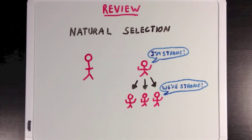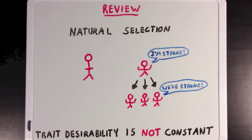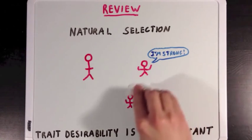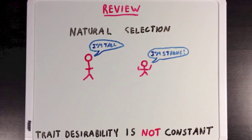But you should know that as times change, so too does the specialness of a trait. The desirability of a trait is not constant. Let's say that a new predator comes into play in our population here, and that can overpower even our strong people. Maybe now someone who's tall is more likely to survive than someone who's strong.